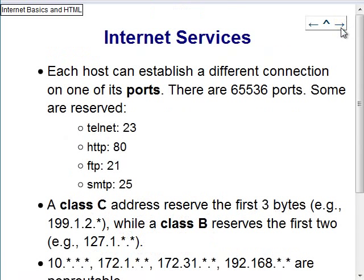When you connect to a machine, you open a connection on a port. Each machine has 65,536 ports. Some are reserved — especially those under 1024. For example, port 23 is Telnet, port 80 is HTTP (the one we'll be using), port 21 is FTP, and port 25 is SMTP.